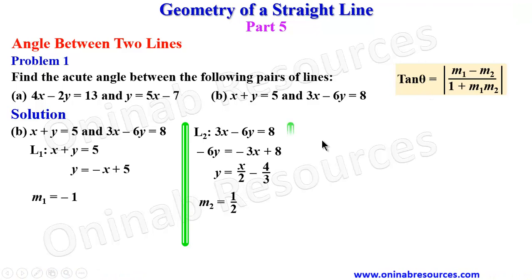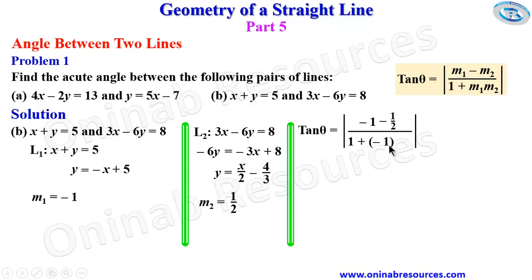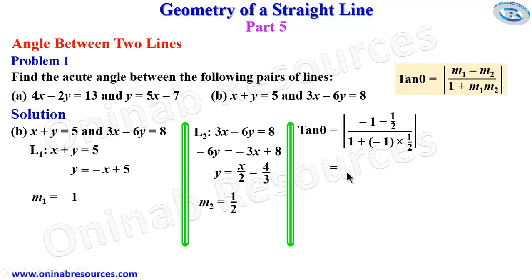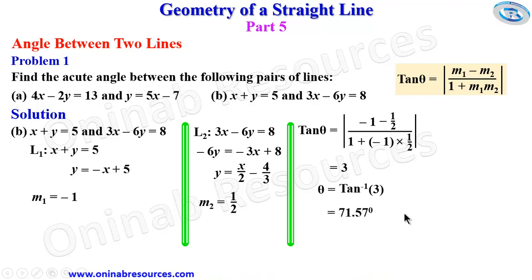We substitute into the relation: tan theta equals the absolute value of negative 1 minus 1 over 2, over 1 plus negative 1 times one half. Simplifying gives tan theta equals 3, so theta equals tan inverse of 3, which gives 71.57 degrees. That's all for part b, and that's the end of the solution to problem 1.